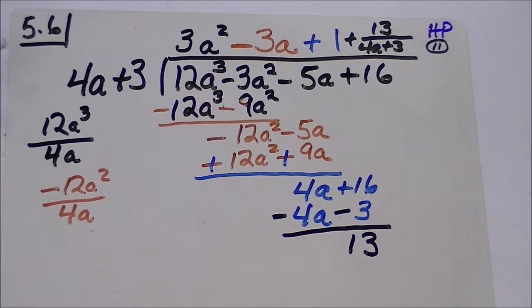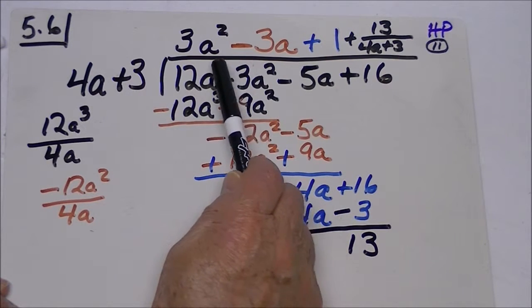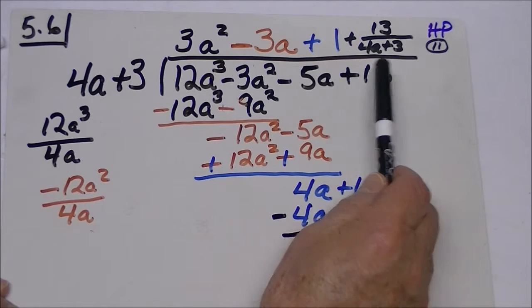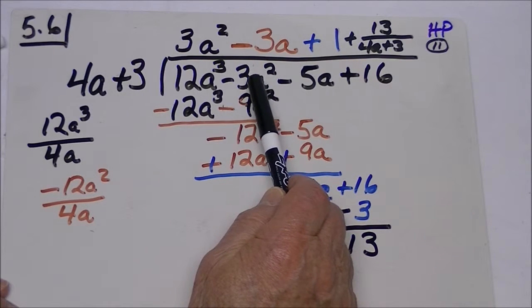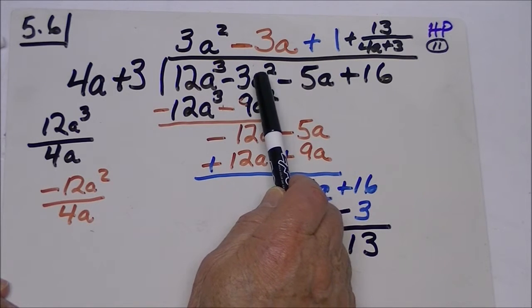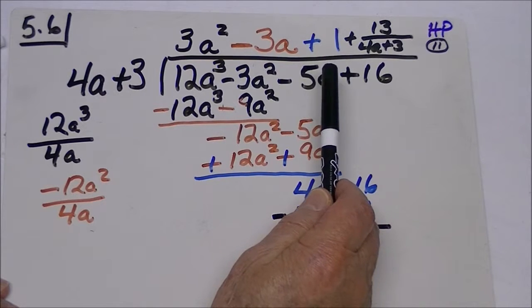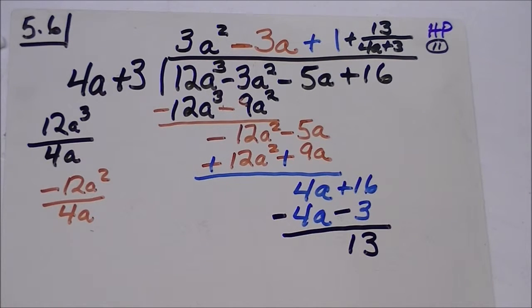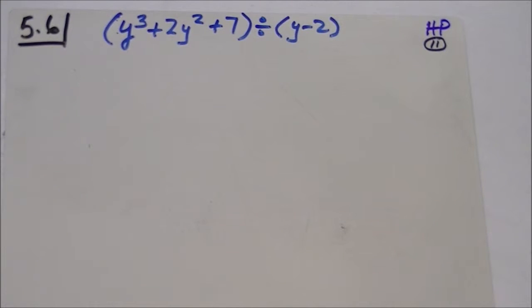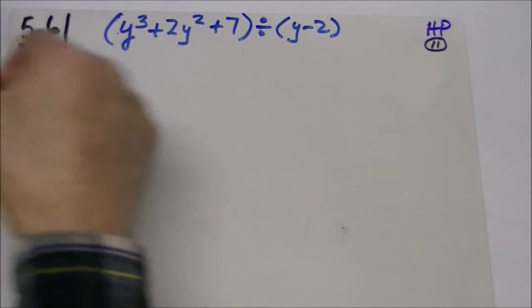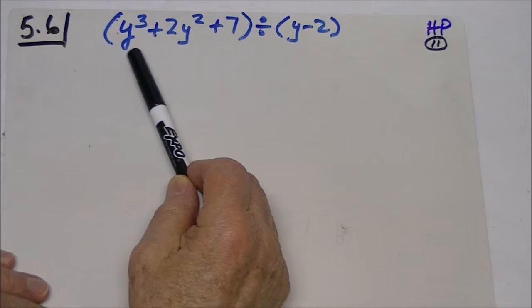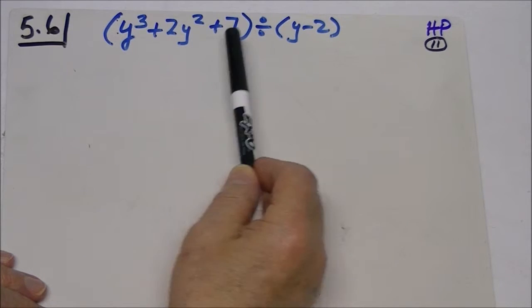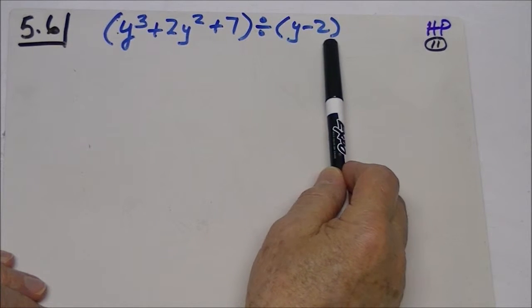In doing these, and again you need to practice, a couple of things we should note is that if there were a power missing, we would have to put a placeholder there. In fact, let's do one like that so you see what it's like. This would be a typical example of where we have a trinomial divided by a binomial.